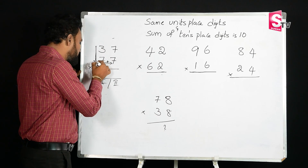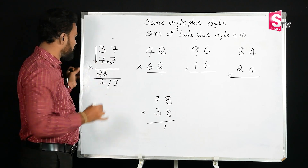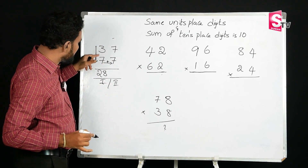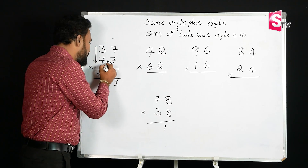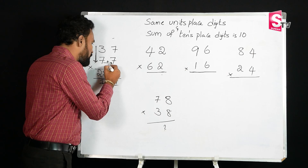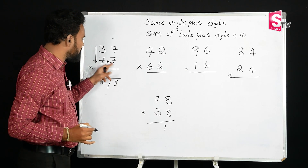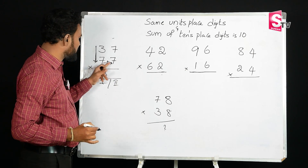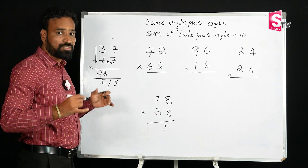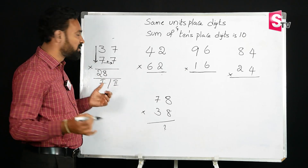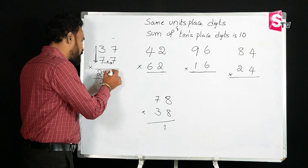Let's check the first part. You will multiply the tens digits: 3 sevens are 21. Then immediately you add the ones digit: 21 plus 7 equals 28. That is the first part of the answer.